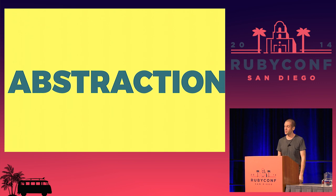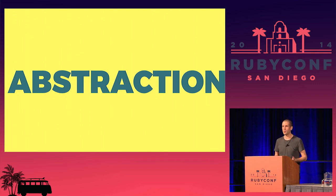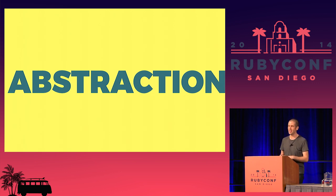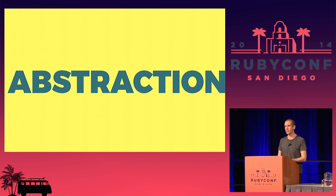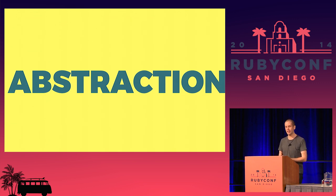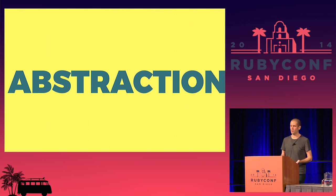Abstraction is our solution to this problem. Abstraction works as an adapter between the fearsome complexity of the universe and our simple primate minds. When the real world is too detailed or too confusing or too counterintuitive for us to work with directly, abstraction gives us big friendly levers to pull on instead. This one powerful idea underlies computers, design, culture, language, and everything else we rely on in our daily work.